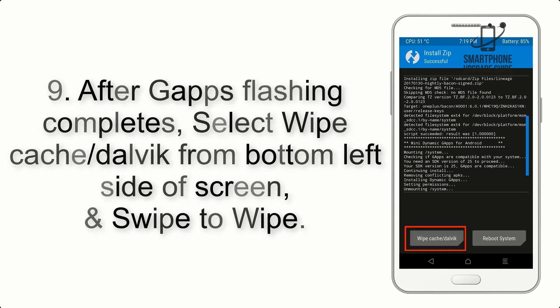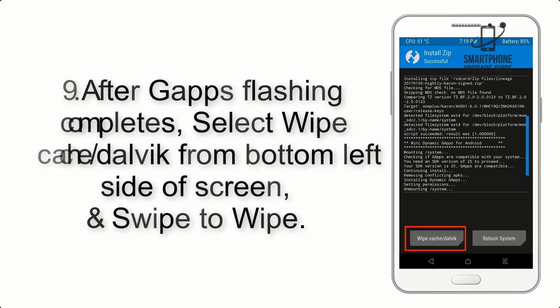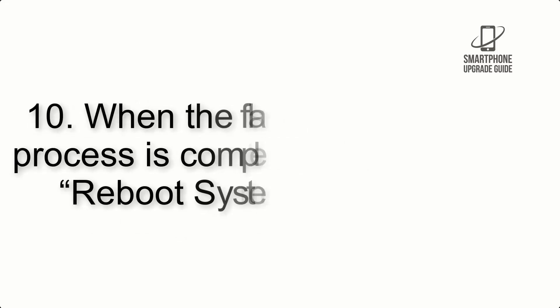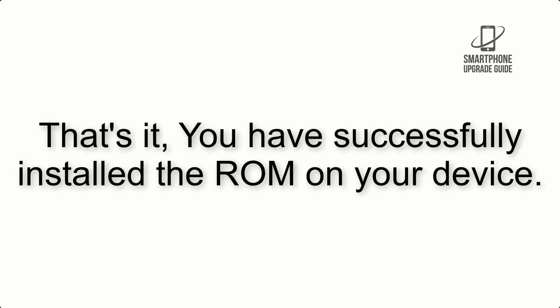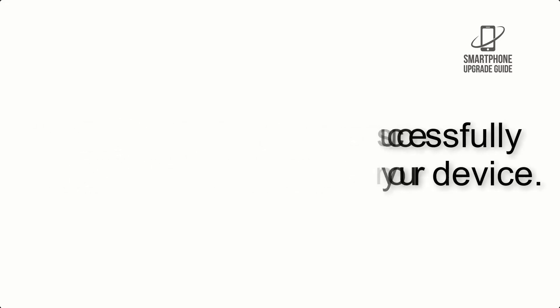Step 8: Flash the GApps zip package in the same manner. Step 9: After GApps flashing completes, select Wipe Cache and Dalvik from the bottom left side of the screen and swipe to wipe. Step 10: When the flashing process is complete, hit Reboot System. That's it — you have successfully installed the ROM on your device.